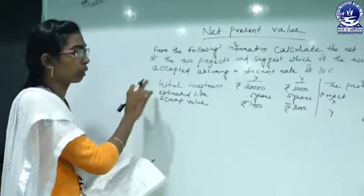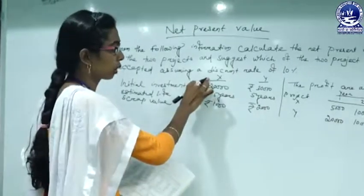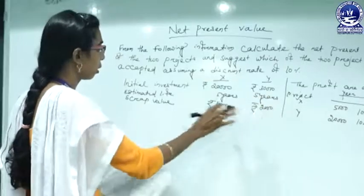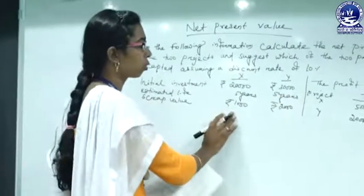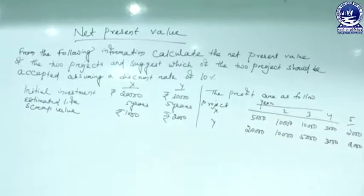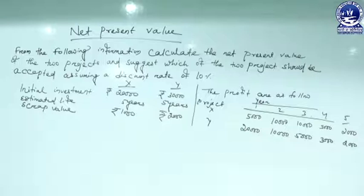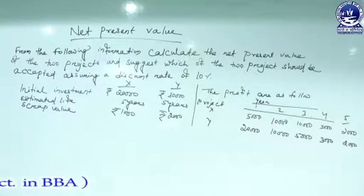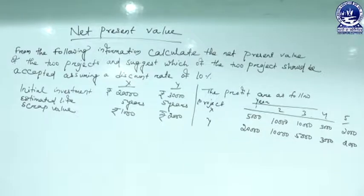The initial investment is ₹20,000 in Project X and ₹30,000 in Project Y. Both projects will run for five years. The scrap value is ₹1,000 in Project X and ₹2,000 in Project Y. Scrap value refers to the estimated selling price of a capital asset — such as a machine, vehicle, or furniture — after its useful life, after all depreciation has been accounted for.